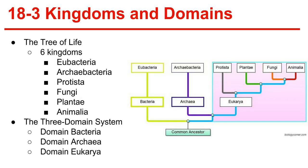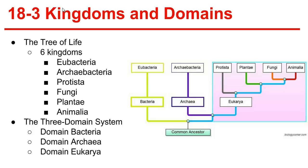18-3, Kingdoms and Domains. The tree of life includes six kingdoms: Eubacteria, Archaebacteria, Protista, Fungi, Plantae, and Animalia. We use the three-domain system. Molecular analysis has given rise to a new taxonomic category now recognized by many scientists. The domain is a more inclusive category. The three domains are: domain Eukarya, composed of protists, fungi, plants, and animals; domain Bacteria, which corresponds to the kingdom Eubacteria; and domain Archaea, which corresponds to the kingdom Archaebacteria.